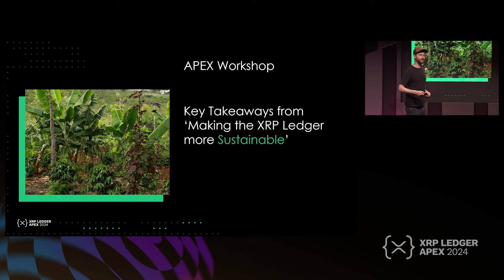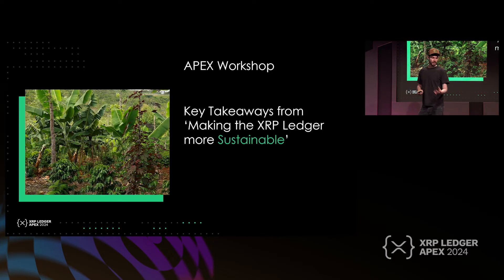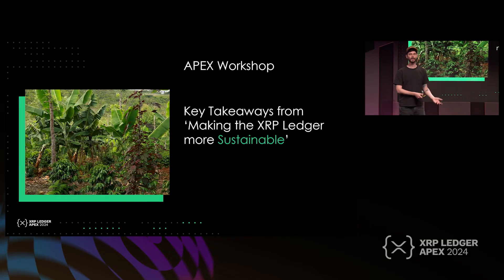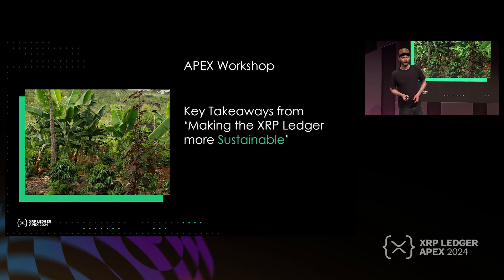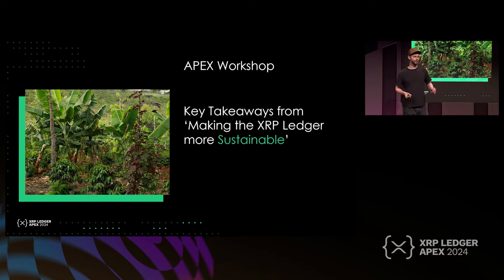And furthermore, what can XRPL take from this? Just an hour ago, there was a workshop on how to make the XRP ledger more sustainable — and it is already energy efficient — but there are some things we can take into consideration. One is offsetting, with a preference for carbon avoidance. When it comes to the field, this can be simply done by good practices and a good balance between agriculture and nature. And offsetting is inevitable, so we have to contribute there and work with the field.